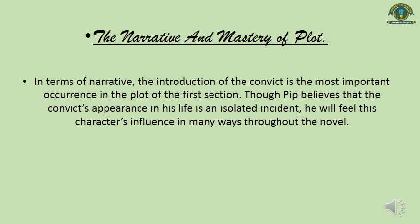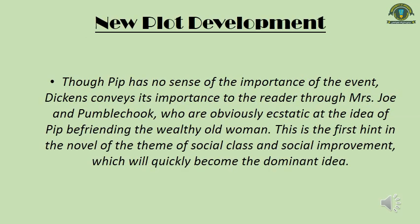In terms of narrative mastery and plot, the introduction of the convict is the most important occurrence in the first section. Though Pip believes the convict's appearance in his life is an isolated incident, he will feel this character's influence in many ways throughout the novel. Though Pip has no sense of the importance of the event, Dickens conveys its importance to the readers through Mrs. Joe and Pumblechook, who are obviously excited at the idea of Pip being friendly with a wealthy old woman. This is the first hint in the novel of the theme of social class and social improvement, which will quickly become a dominant idea.